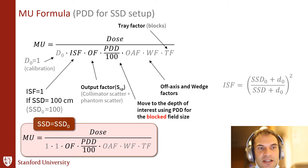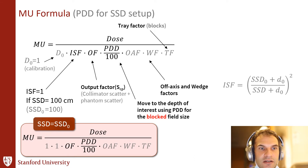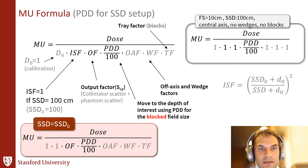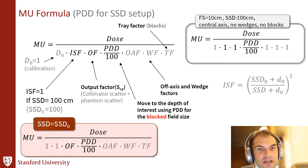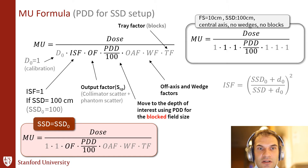For simple cases, most SSD setups would be SSD 100, the same as the calibration, so several terms drop out. You're mainly concerned with the PDD and the output factor. If you don't have any blocks or wedges, if you're only looking at dose on the central axis of the beam, and field size is 10 by 10, then you just look at the PDD.